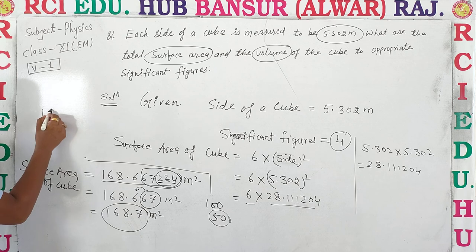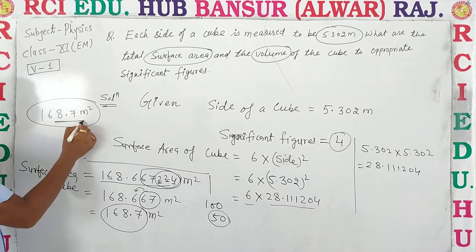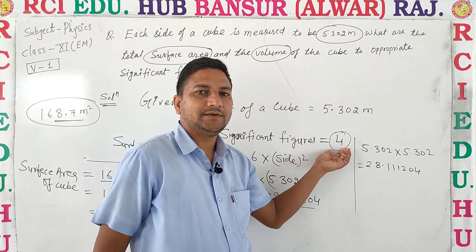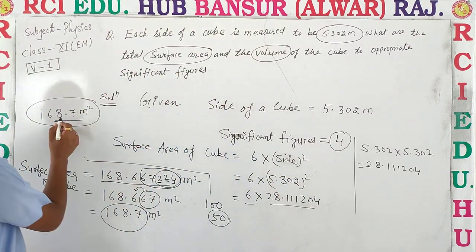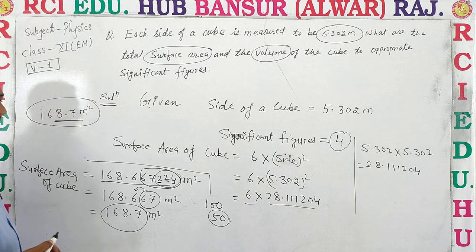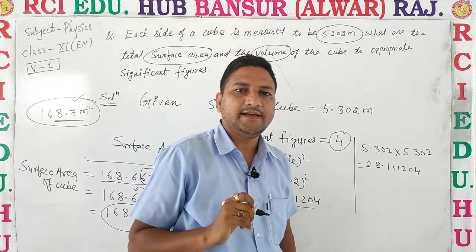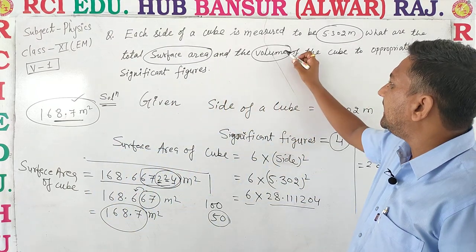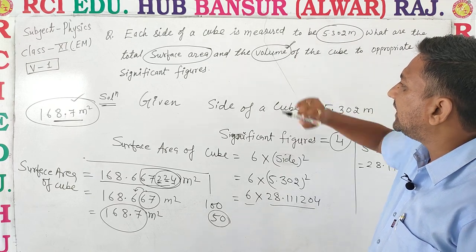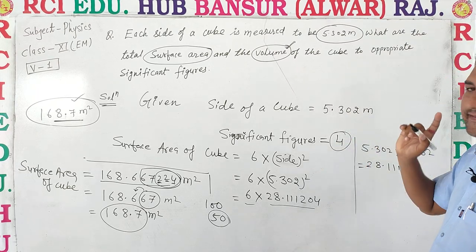Final answer: surface area = 168.7 meter square. Check करें: given value में significant figures थे 4, answer में rounding off के बाद 1, 2, 3, 4 — correct! According to question our answer is right. अब second part — cube का volume calculate करते हैं, और उसका answer भी 4 significant figures में आना चाहिए।